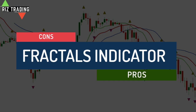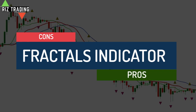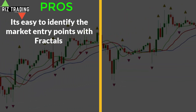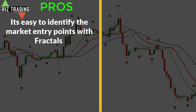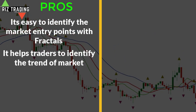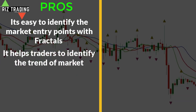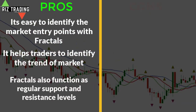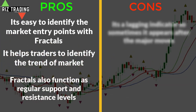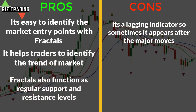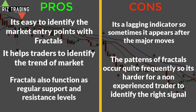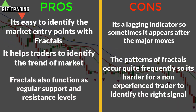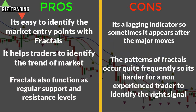Now let's talk about some pros and cons. Starting with the pros: Number 1, it's easy to identify the market entry point with fractals and it also helps in placing the perfect take profit and stop losses. Number 2, it helps traders to identify the trend of the market. Number 3, fractals also function as regular support and resistance levels. Now the cons: Number 1, it's a lagging indicator so sometimes it appears after the major moves. Number 2, the patterns of fractals occur quite frequently, so it's harder for a non-experienced trader to identify the right signal — that is why you need to follow the strategy to filter the false signals.